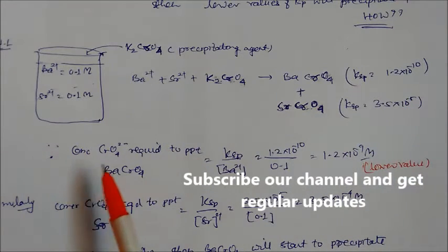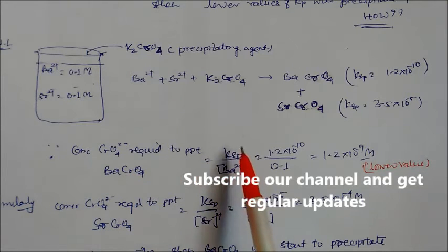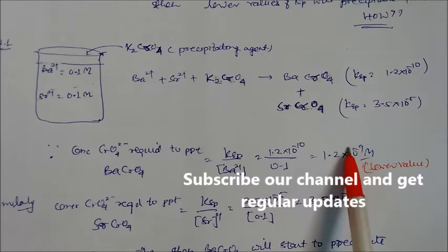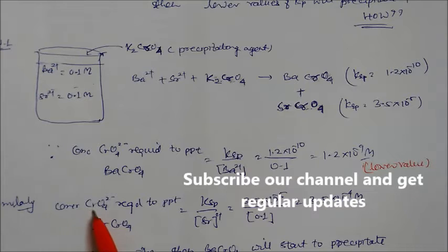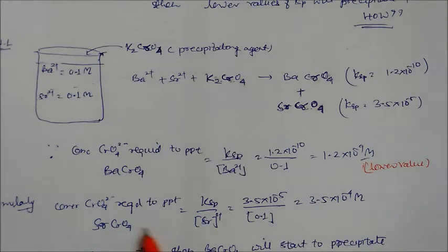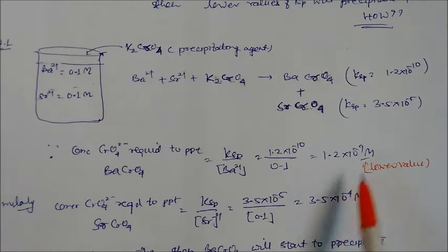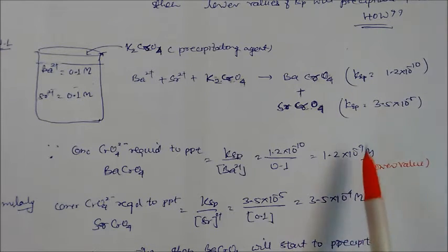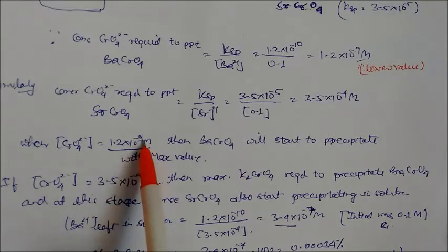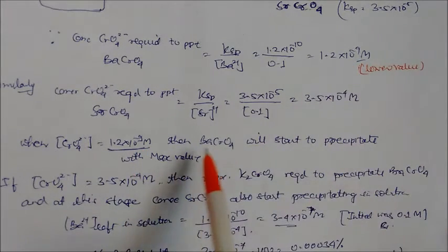The concentration of chromate required to precipitate barium chromate is Ksp divided by [Ba²⁺]. Since barium is 0.1 molarity, we get the chromate concentration. Similarly, the chromate required to precipitate strontium chromate is Ksp divided by [Sr²⁺], also 0.1 molarity. Comparing the two: the chromate needed for barium chromate is 10⁻⁹ and for strontium chromate is 10⁻⁴. The lower value means barium chromate will precipitate first.